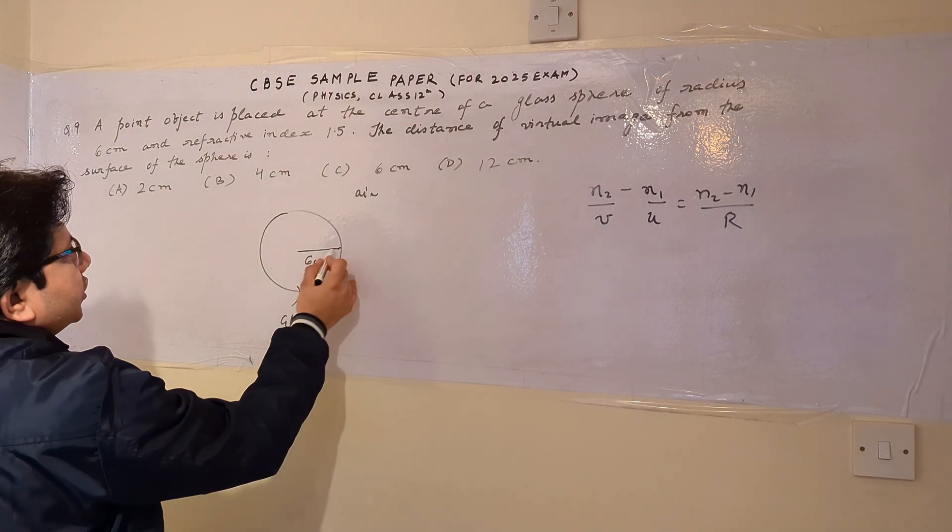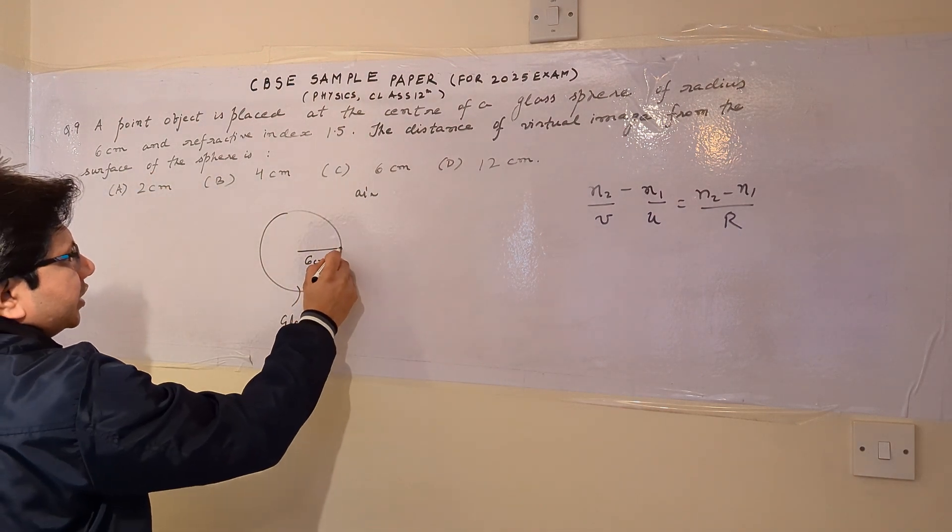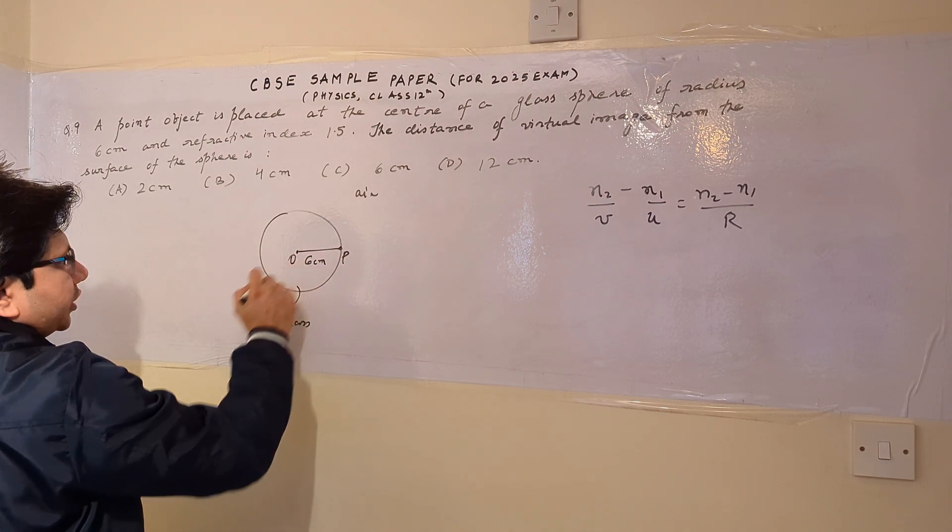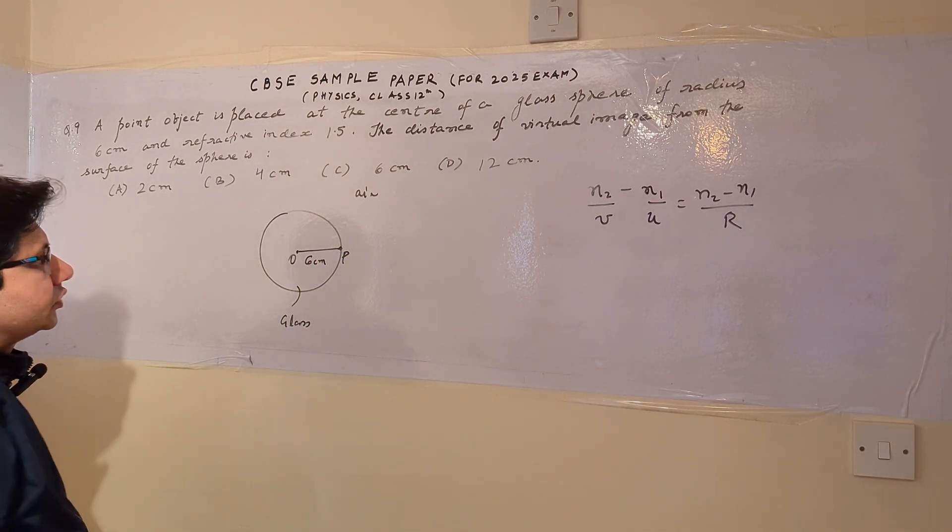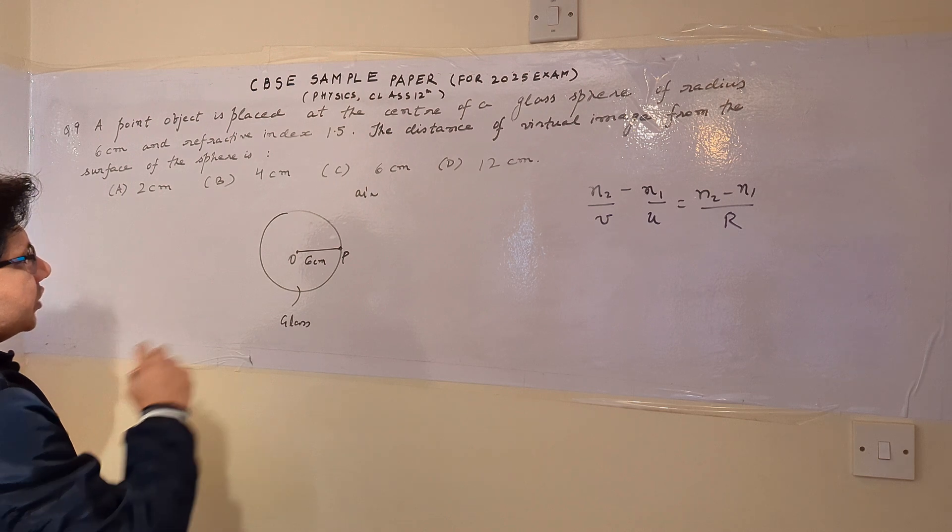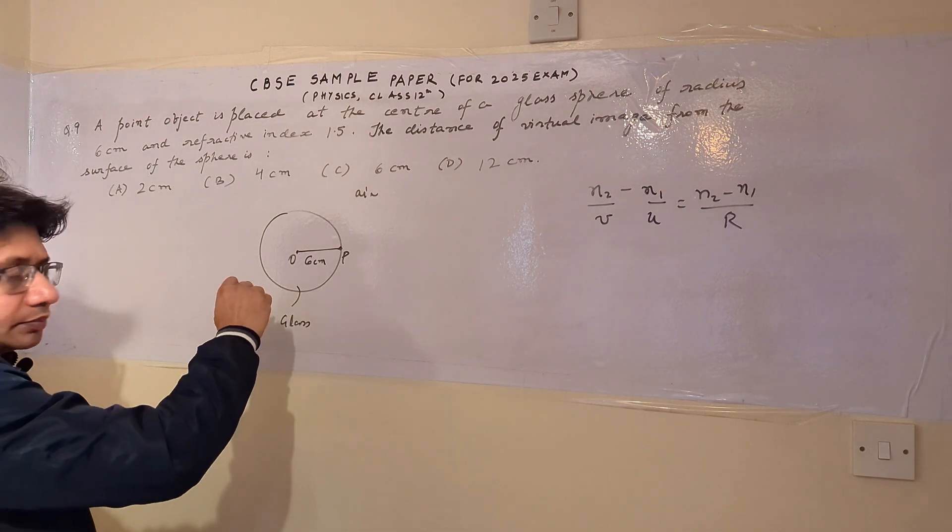So the distance of the object is 6 centimeters from the glass sphere. It means that this is the pole and this is the location of the object. So the object is at the center of this sphere.